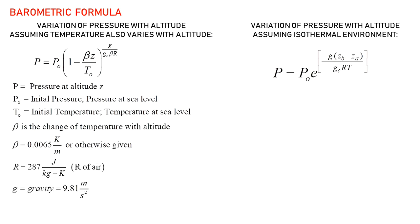Assume that beta is equal to 0.0065 Kelvin per meter. R is gas constant of air, g is gravity. Also note that molecular weight of air is 29.